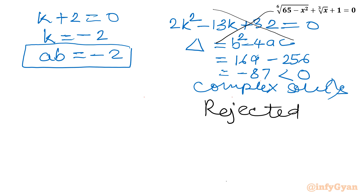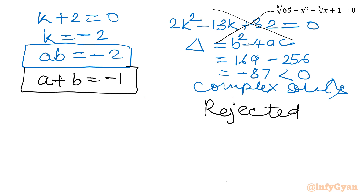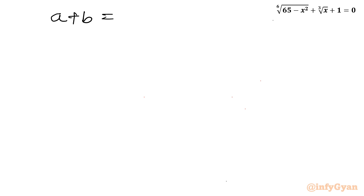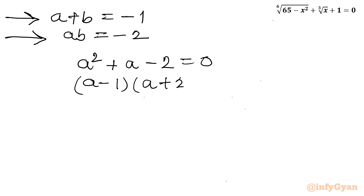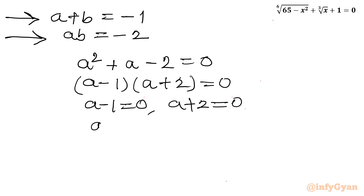Now we have ab equals negative 2 and a plus b equals negative 1. These are sum and product of roots, so I will frame one quadratic equation: a² minus (sum of roots)·a plus (product of roots) equals 0, which gives a² plus a minus 2 equals 0. Factorizing: (a minus 1)(a plus 2) equals 0. So a equals 1 or a equals negative 2.